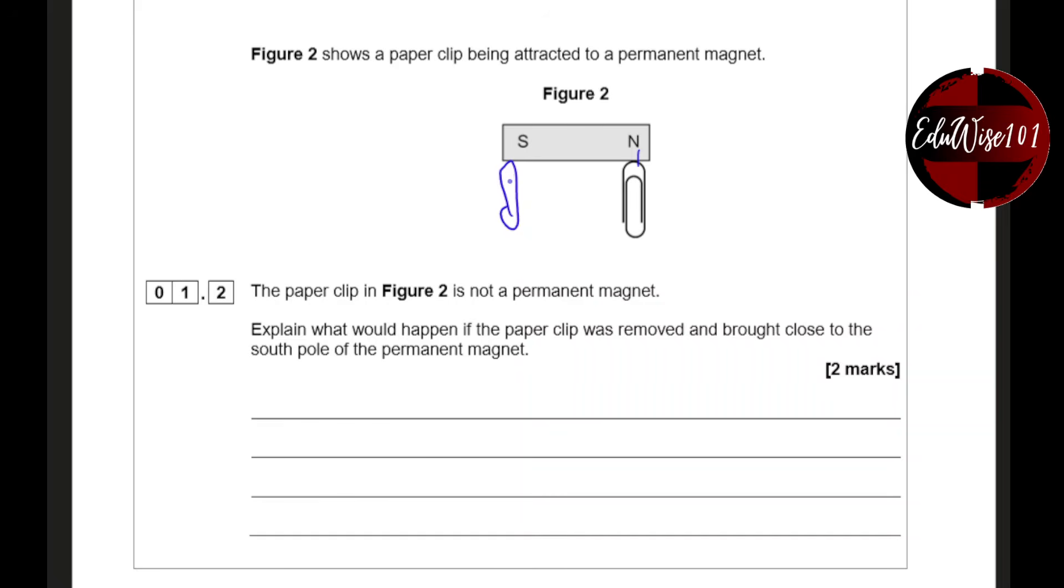And it will behave exactly the same way if you bring it to the south pole as well. So the paper clip would still be attracted to the magnet because of induced magnetism. You need to give a reason. Here they're asking for you to explain what would happen, why it would happen. That's why you're going to get the second mark when you say because of induced magnetism.